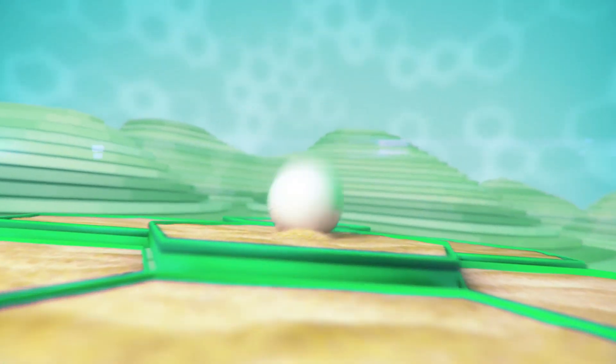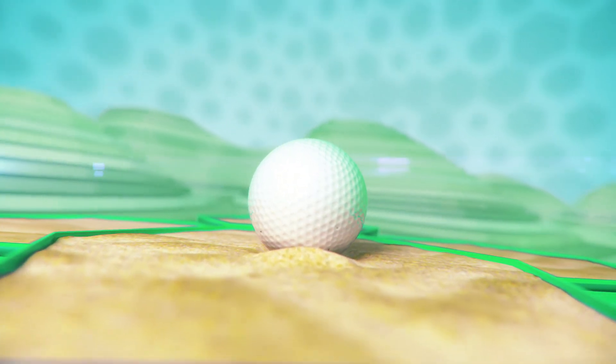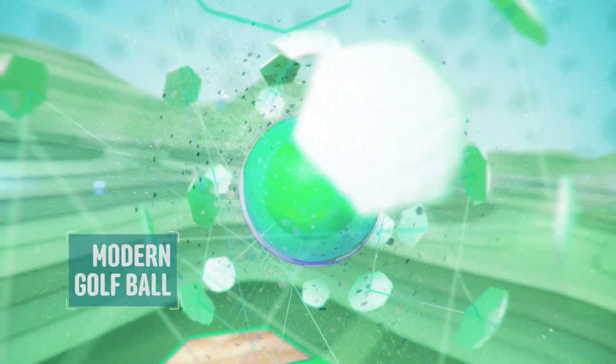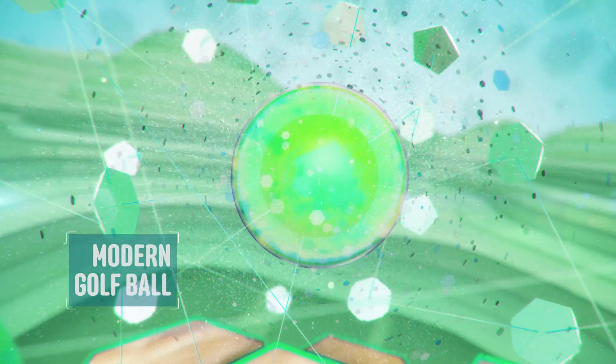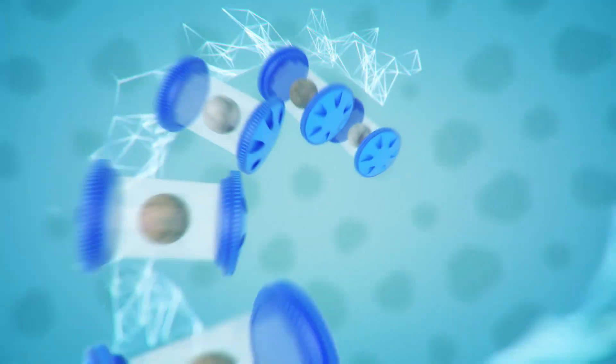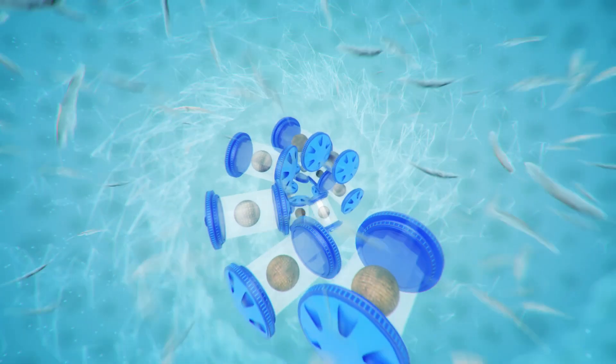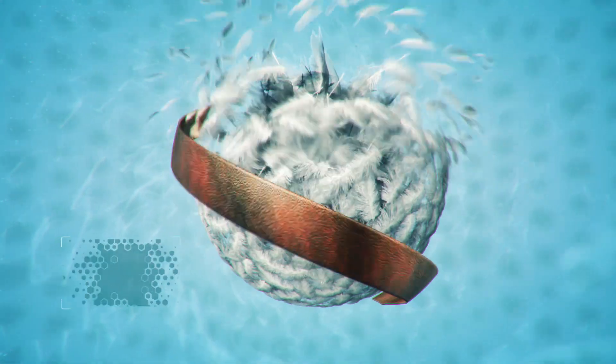Anyone who's ever sliced into a sand trap knows golf is not an exact science, but what goes into the modern golf ball is. Back in the old days, the ancestors of today's Titleists and TaylorMades were simply compressed goose feathers wrapped in leather.